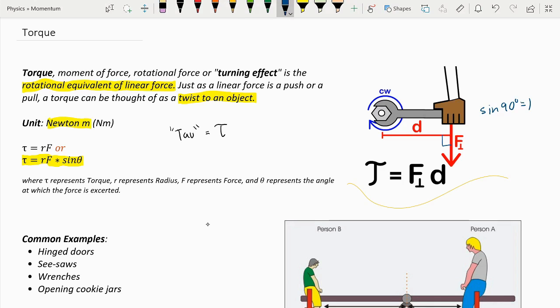So in other words, the torque here would simply just be the radius multiplied by the force. But that is only when the force is applied perpendicular to the radius. Another thing to note is that the larger the distance or the radius gets, the higher the torque.